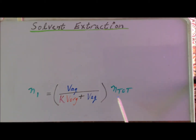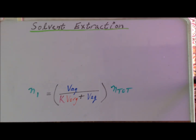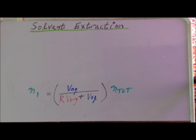Recall that N_total is the number of moles of our solute of interest that we originally began with in the aqueous phase. N1 is the number of moles of that solute that remain in the aqueous phase after one extraction. V_aq is the volume of the aqueous solution, V_org is the volume of the organic solution that we extracted into, and K is the partition coefficient for the solute between the organic phase and the aqueous phase.